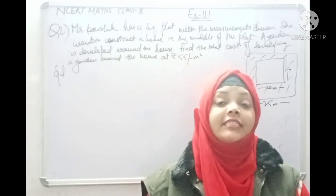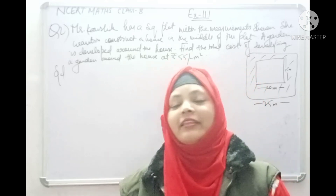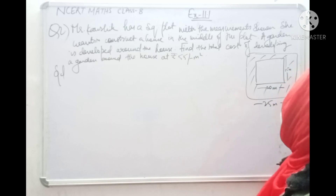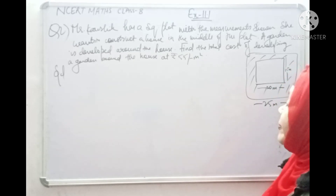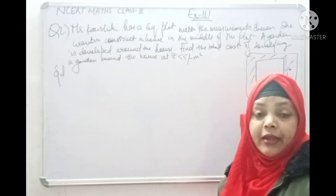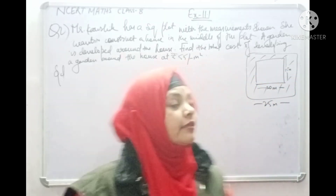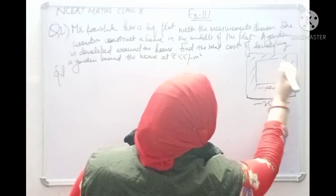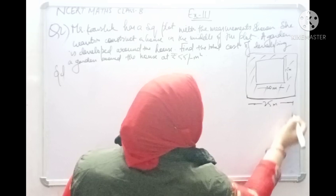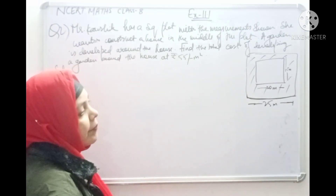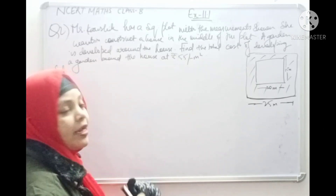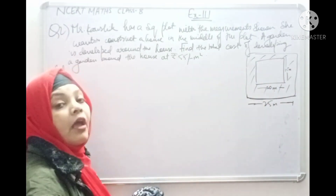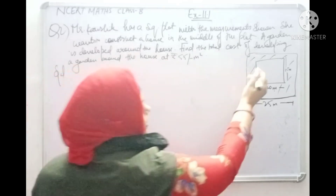Now let's come to the second question of Exercise 11.1. The question says: Mr. Kaushik has a square plot with side 25 meters. He wants to construct a house in the middle of the plot. The side of the square plot is 25 meters, and the house has length 20 meters and breadth 15 meters. A garden is developed around the house. We need to find the total cost of developing the garden at rupees 55 per meter square.